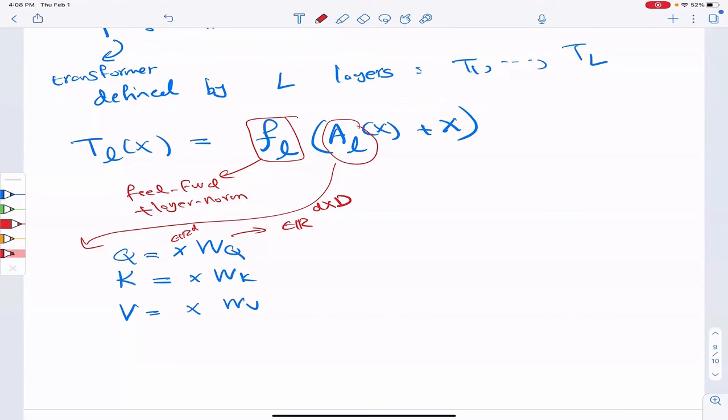So the output for the queries, keys and values, they can be different. In fact, they are different. So I use a bad notation here because in the previous case, my small d was 512, my capital D was 64. So capital D was smaller than small d. Anyways, you get the idea.